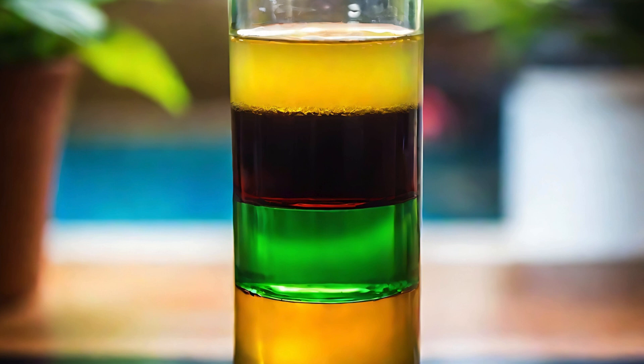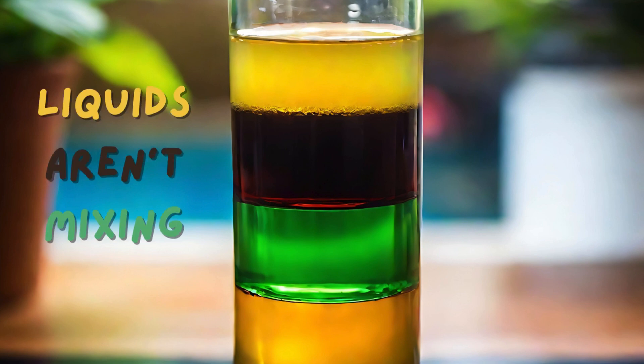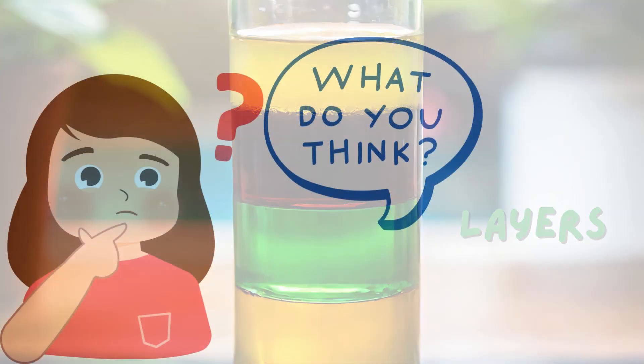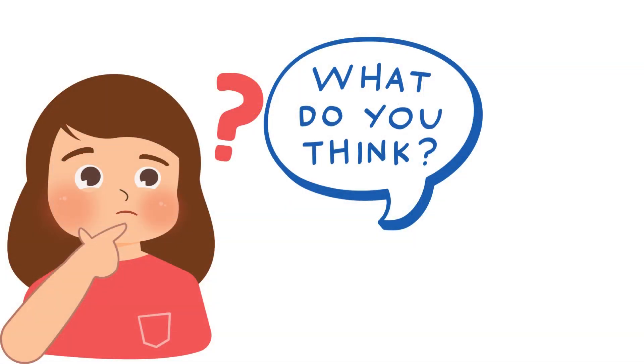Look at this container filled with different liquids. What do you notice? Liquids aren't mixing together. Instead, they've formed separate layers. Why do you think these liquids are staying in separate layers instead of blending together?